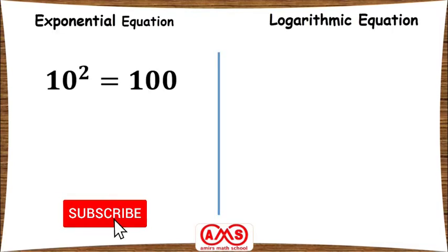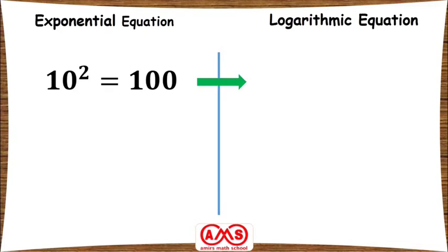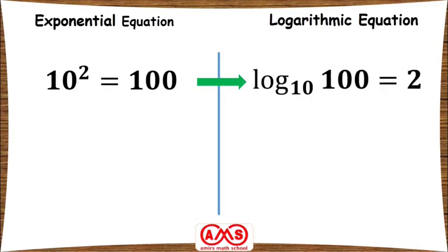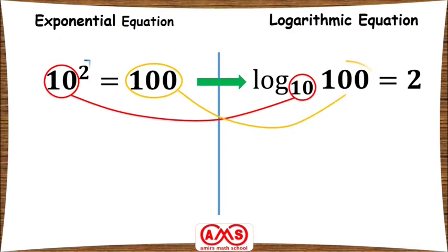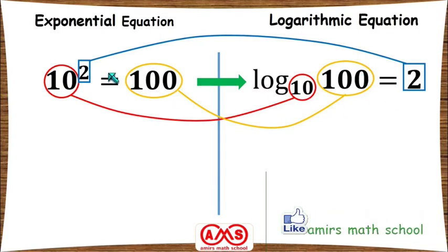Let's start with 10 squared equal to 100. If we want to write this exponential form into the logarithmic form, we will write log base 10 of 100 equal to 2. This 10 is written as the base of the logarithm, 100 is written here, and 2 is written here.